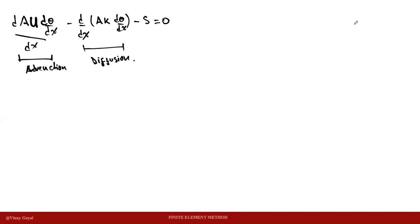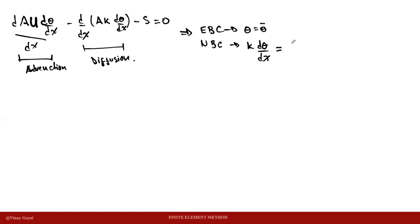Two boundary conditions are identified in this problem. The essential boundary condition is related with the primary variable, which is theta, and the natural boundary condition is related with the diffusion term. So it would be k·d(theta)/dx equal to q-bar for the general case.